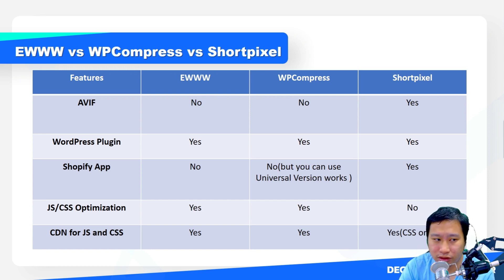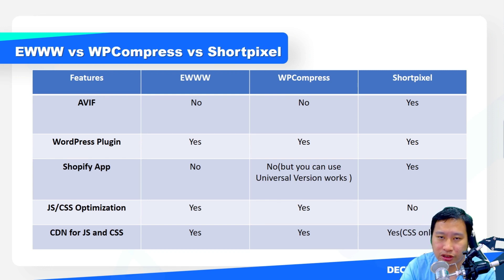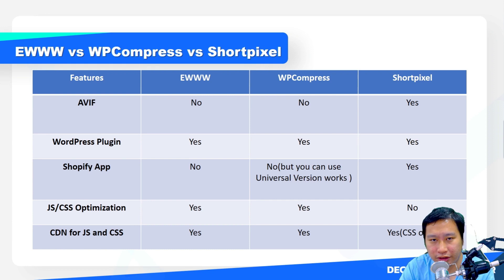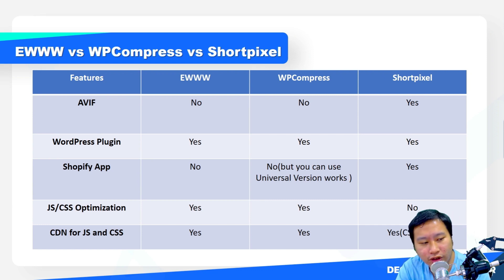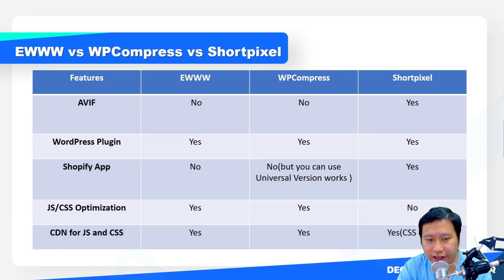Short Pixel does have a Shopify app, but outside of WordPress and Shopify you'd need a developer to implement it on other sites. For JavaScript and CSS optimization, Ewww and WP Compress do optimize your JavaScript and CSS, while Short Pixel is really just focused on images. For CDN delivery of JS and CSS, Ewww and WP Compress can serve these files through their CDN as well, while Short Pixel only serves CSS through their CDN.